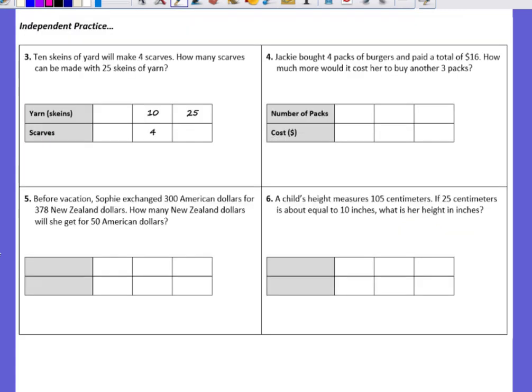Okay so now you're ready for your independent practice. You'll see that there are four problems, numbers three through six. You're going to pause the video and solve these problems in your notes. You can do one at a time, come back and check it. You could solve all four, then come back and check all four at the same time. However you wish to do it. But please make sure that you do check your answers. Okay go ahead and get started.